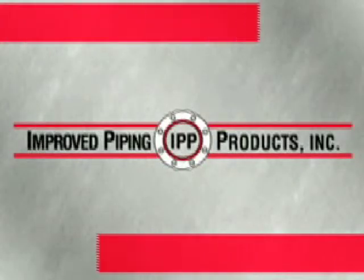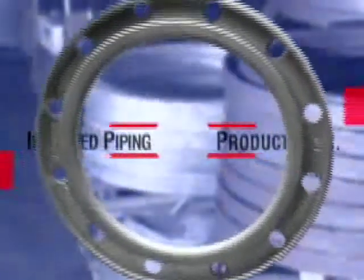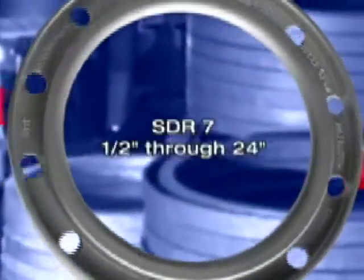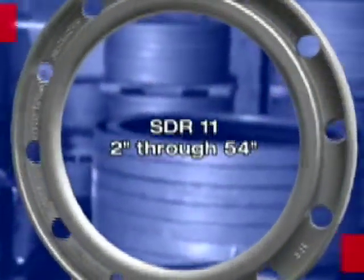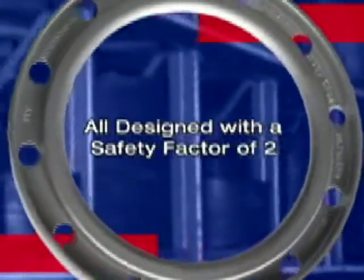In order to make the backing ring selection process less confusing, IPP has designed its products in conjunction with the most commonly used SDR pipes in the industry. Our standard lines include SDR 7 and SDR 11, with many more to choose from, and all are designed with a safety factor of 2.